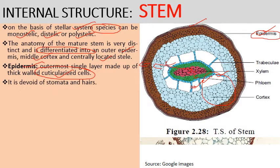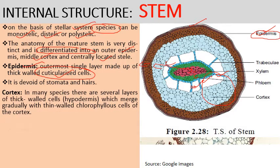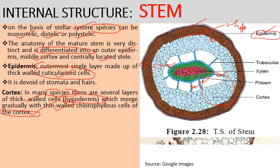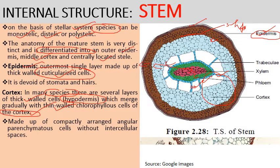The cortex follows the epidermis. In many species, there are several layers of thick-walled sclerenchymatous cells called hypodermis, which merge gradually with thin-walled chlorophyllous cells of the inner cortex. The cortex is made up of compactly arranged angular parenchyma cells without intercellular spaces.